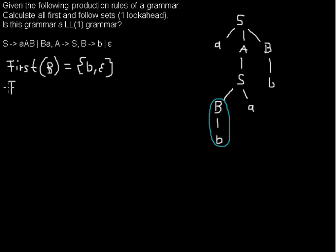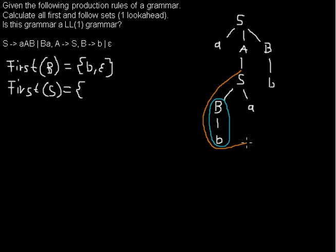Next I want to calculate the First set of S. Now you see why I had to do B first, because as you can see here, the first terminal that is leftmost under S could be something that is derived from B. So we have, in one case, the small b.